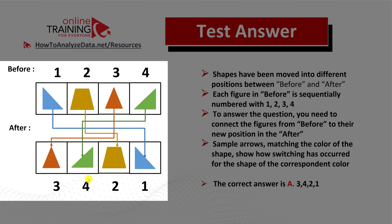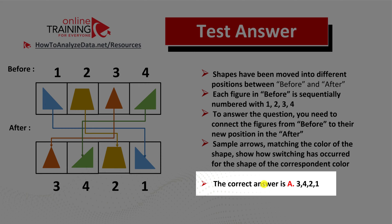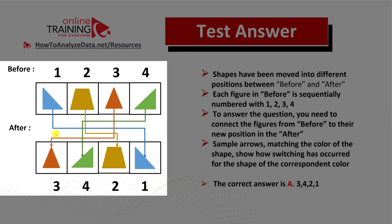Another example: if we trace the green triangle, it moves from position four to position two, so the second spot in the after position would have number four. We've determined that the fourth spot will have one and the second spot will have four. This way you can trace all the objects and determine new positions, then calculate the correct answer. In this case, the correct answer is choice A: three four two one.